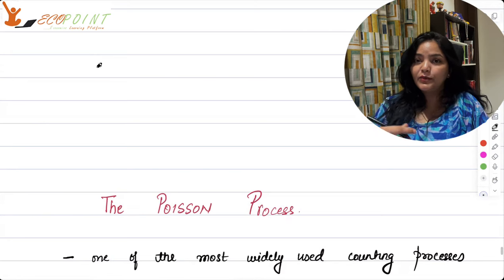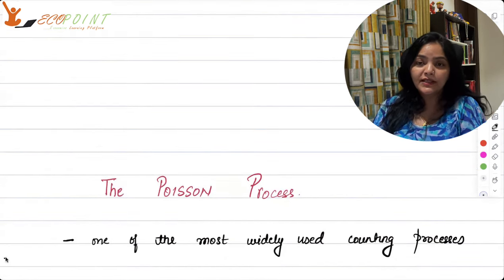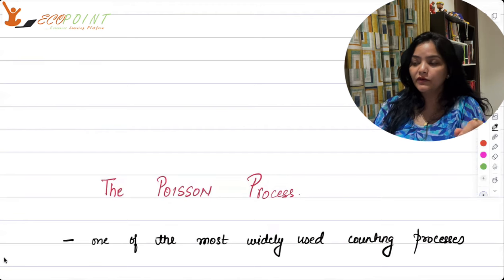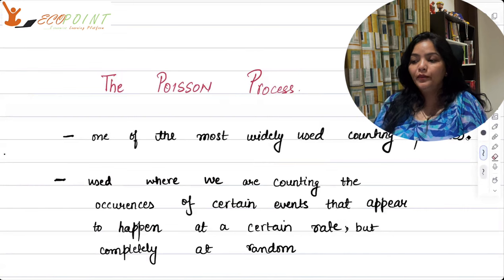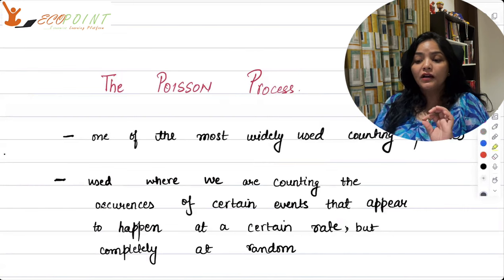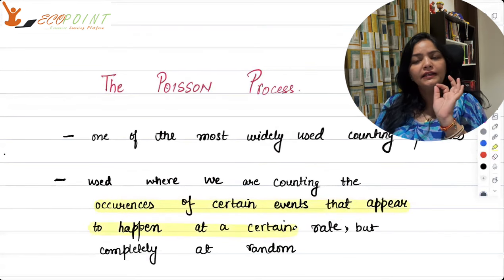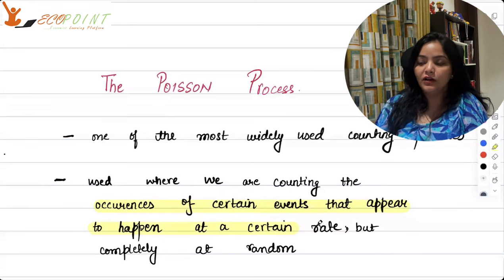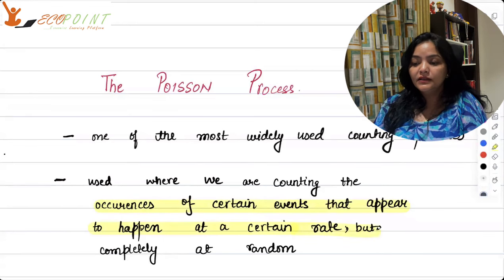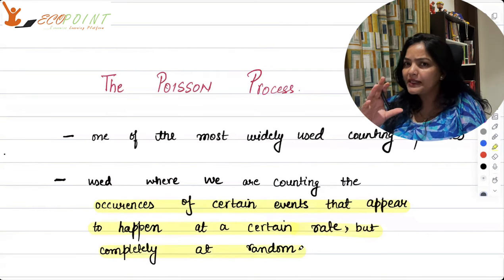And you will realize when I will give you the example where it can be used. In order to understand Poisson Process, let's get to the base of it. Where and when it is used. So it is used where we are actually counting the occurrences of certain events that appear to happen at a certain rate. So you have this rate, average rate of occurrence, but completely at random.